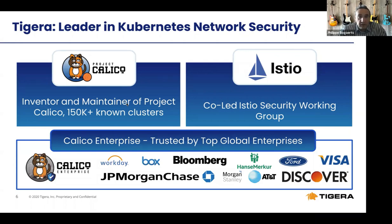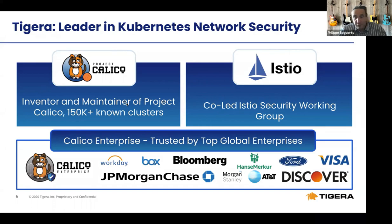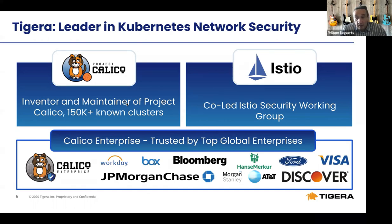When we talk about Calico, we typically talk about Project Calico, which is the open source version. But of course there's also Calico Enterprise, which is a supported solution based on Calico together with some advanced and additional tools to facilitate troubleshooting, visibility, logging, and so forth. We also integrate with Istio, so when your choice is to use Calico, you're sure that it's future proof. Calico Enterprise is used by the biggest companies around the world, including AWS and Google.